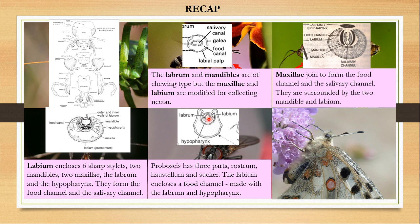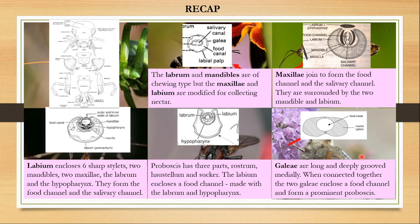Finally, the siphoning mouthparts of butterflies are made by two galeae that join together to form a straw-like structure. These two galeae have median grooves forming the straw; it is kept coiled when not in use, and when extended it draws nectar from flowers. Hope you liked this video. Please come for my next video.